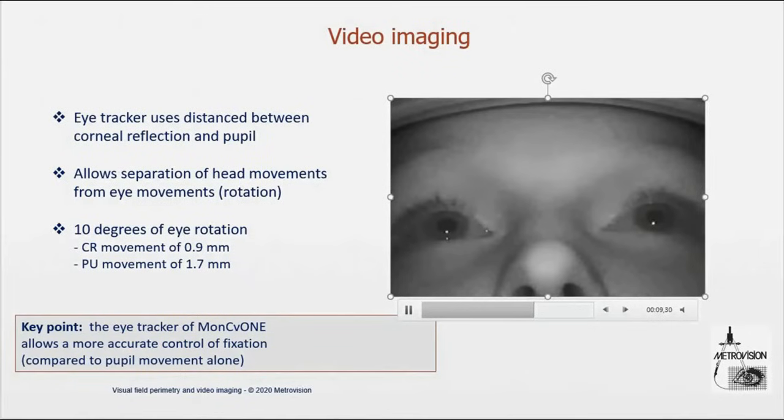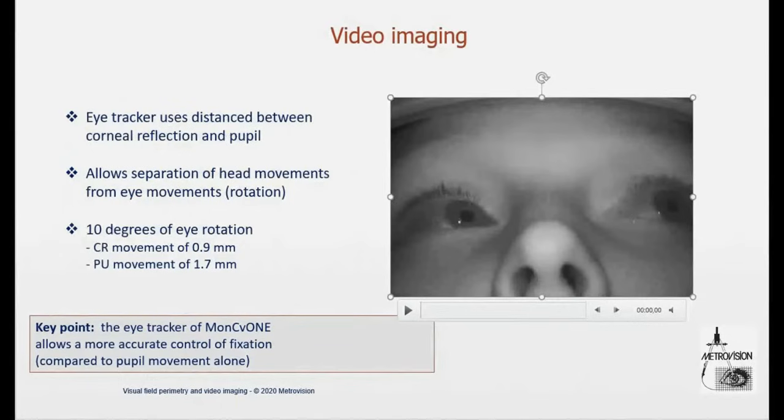The camera is not only a wide-field camera, but it's also with high resolution. The advantage of high resolution is that it allows you to monitor more accurately the fixation. Looking at this image, you see the pupil, and also you see this little bright spot, which is a corneal reflection.